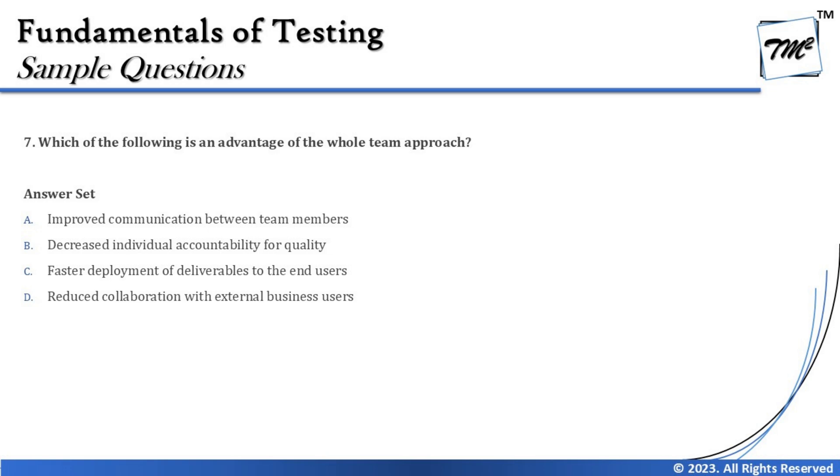The next question is number seven: which of the following is an advantage of the whole team approach? Just to recall quickly, the whole team approach is a concept from agile introduced by extreme programming. In the whole team approach, a combined team works together and everyone takes responsibility for quality — developers, designers and testers work together. The key aspect is that teams look for face-to-face communication, better collaboration, understanding each other's needs, and helping each other take ownership of tasks so someone can pick up another person's task.